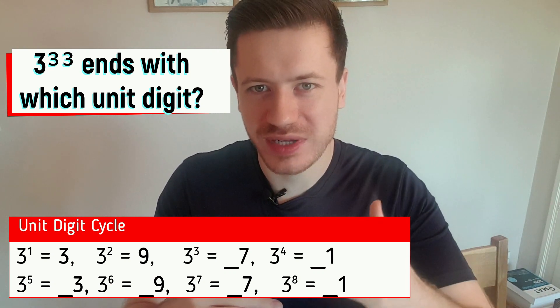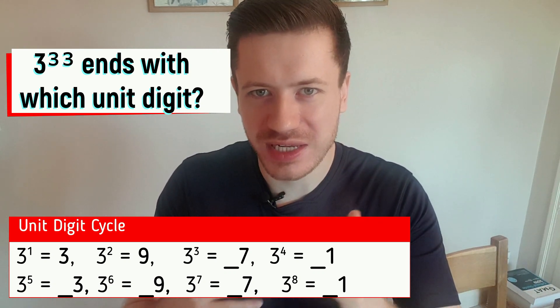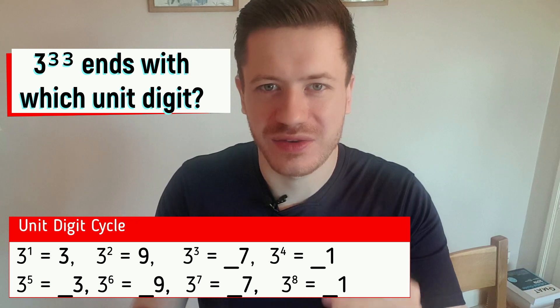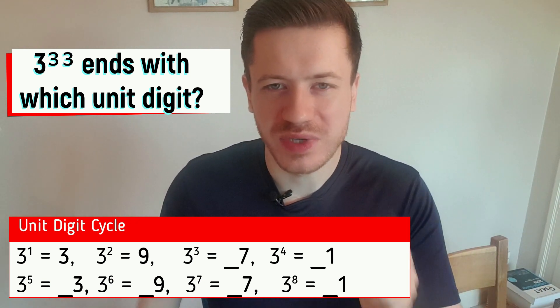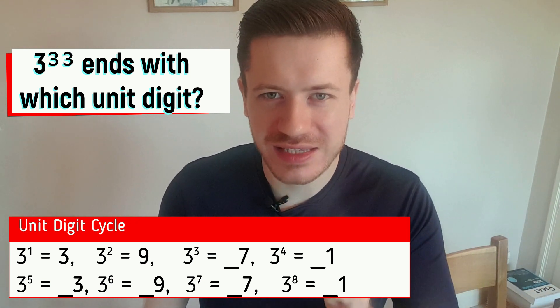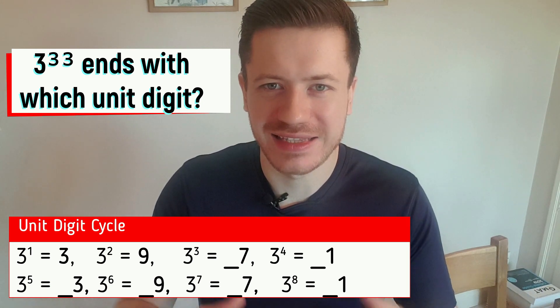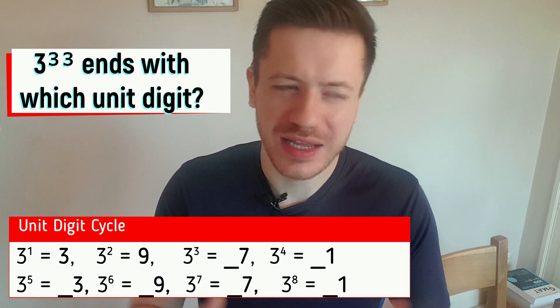Therefore, the next one in the sequence, three to the power of 33, is going to end in a three. So without working out, we can confidently say that three to the power of 33 ends in a three. Quite a nice coincidence, I think. Don't worry if that was a lot to take in. We're going to do a couple more examples to get you going.